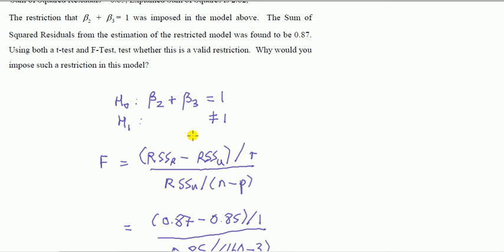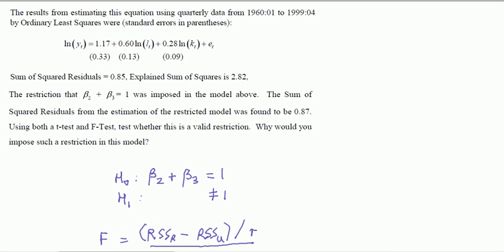So let RSSᵣ denote the residual sum of squares from the restricted model minus the residual sum of squares from the unrestricted model, divided by a number of restrictions, here being one. Just count the equalities in your statement—there's only one equality statement. N we've got from before, it's 160 minus p. We've got that from before as well.